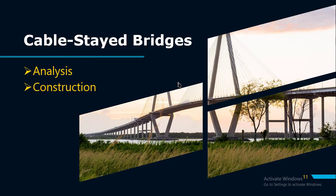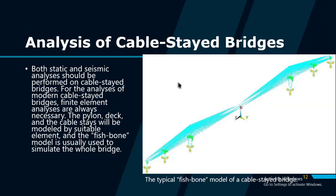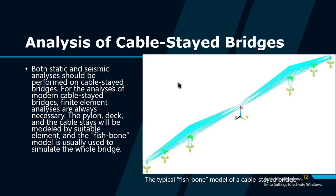In the analysis section, both static and seismic analysis should be performed on cable-stayed bridges. For modern cable-stayed bridge analysis, finite element analysis is always necessary. The pylon, deck, and cables are modeled by suitable elements, and the fishbone model is usually used to simulate the whole bridge. The cable sag behavior is modeled using a modified modulus of elasticity. A stage-by-stage phase analysis is always necessary to consider force transformation and load redistribution during erection. Both linear and non-linear analysis can be performed using FEM software packages, and dynamic analysis for determining frequencies and vibration modes should also be performed.